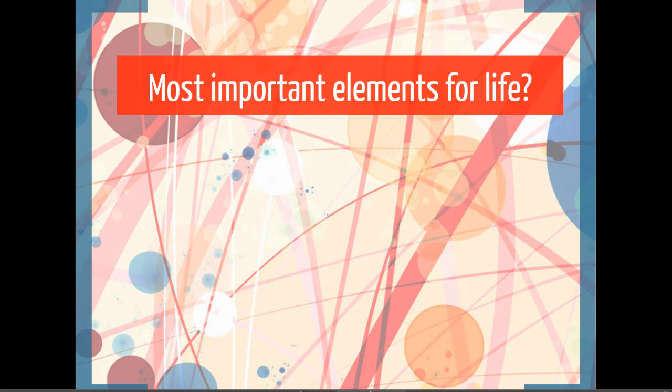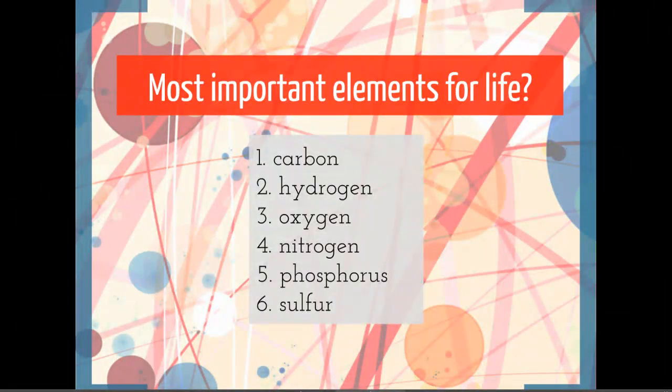The most important elements of that whole periodic table are going to be these big six: carbon, hydrogen, oxygen, nitrogen, phosphorus, and sulfur. Everyone's heard of the first four, certainly. Phosphorus and sulfur, we'll talk more about those. They're going to be important in the building blocks of life.